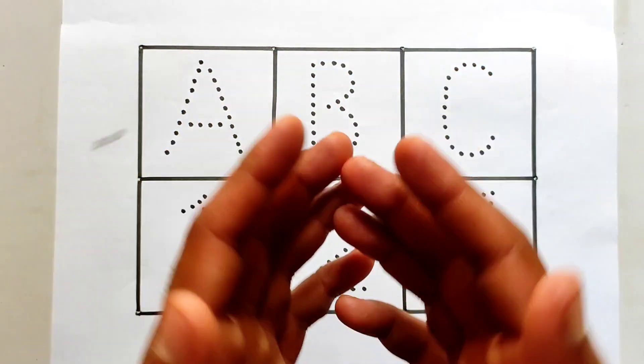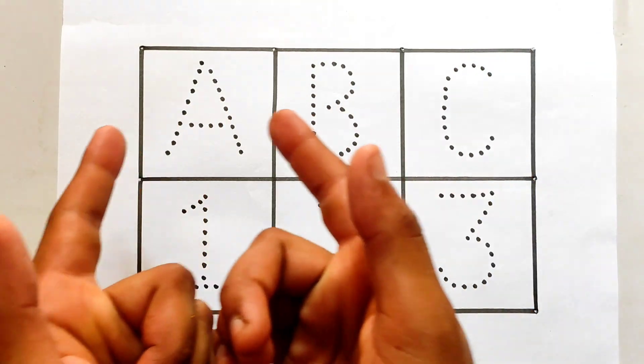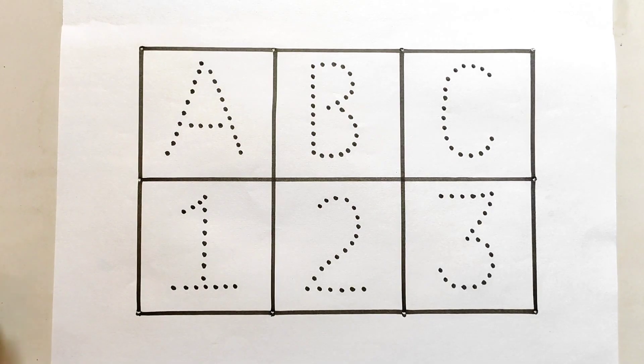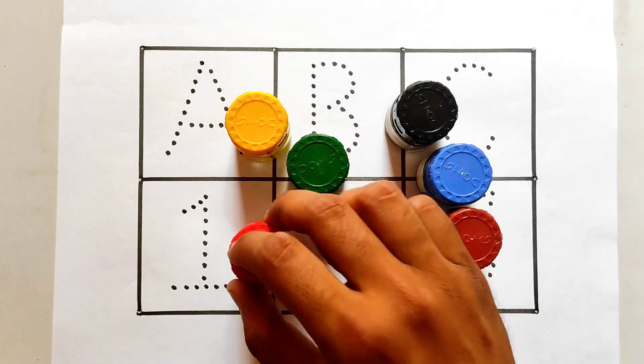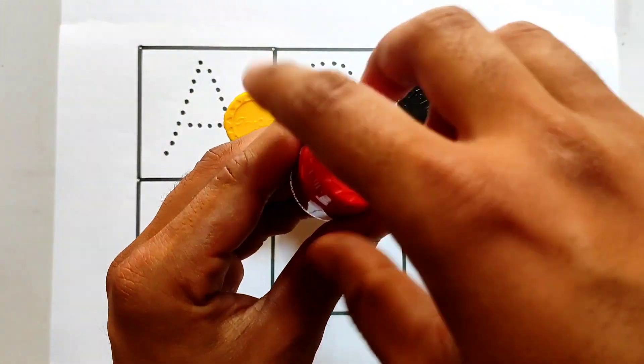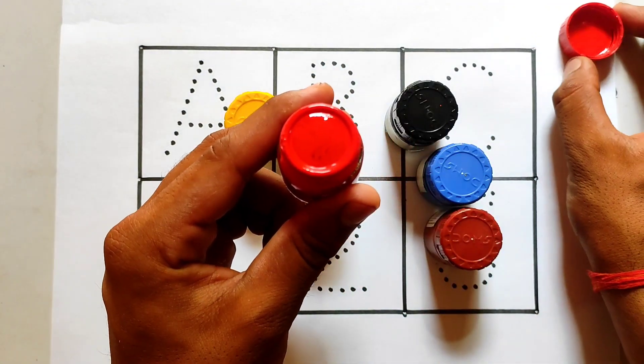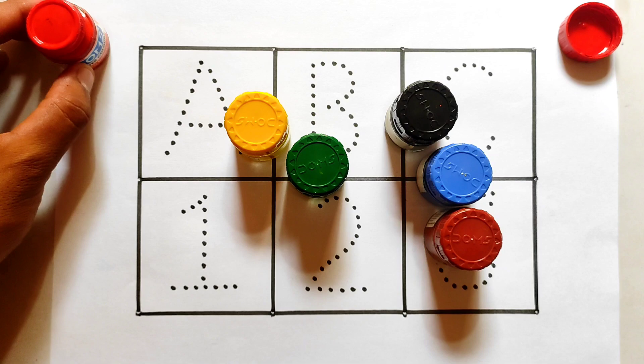Hello kids, welcome back to another video. So kids, today we are going to learn alphabets and numbers by using these amazing colors. So first of all, be aware about the colors name. This is red color, red color.